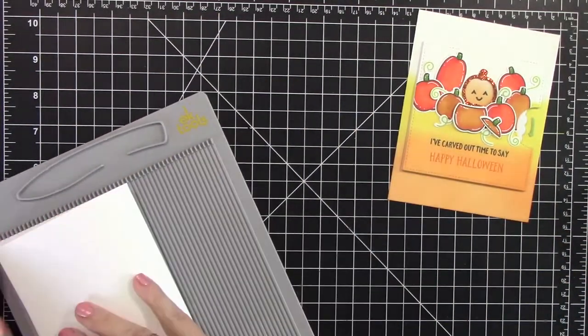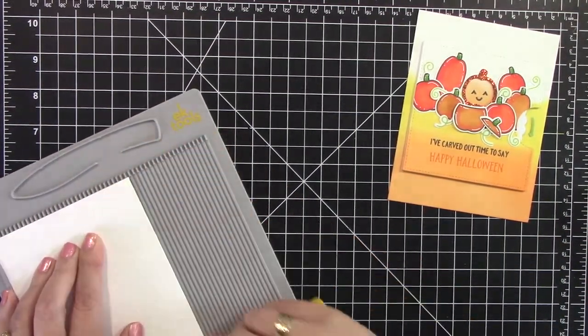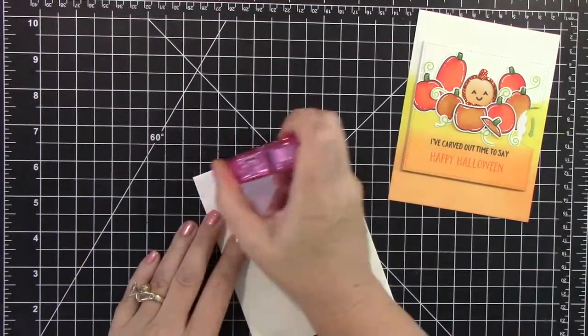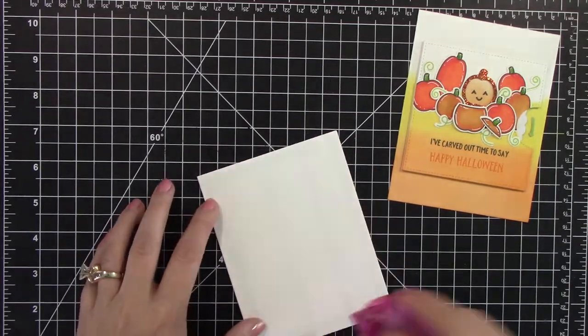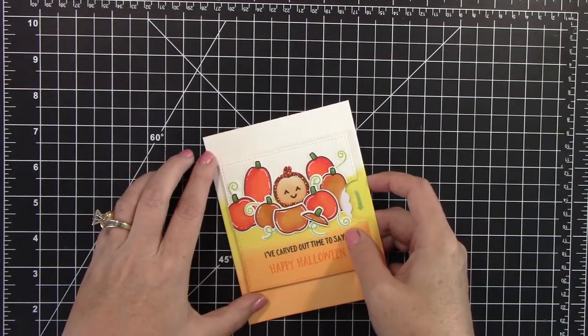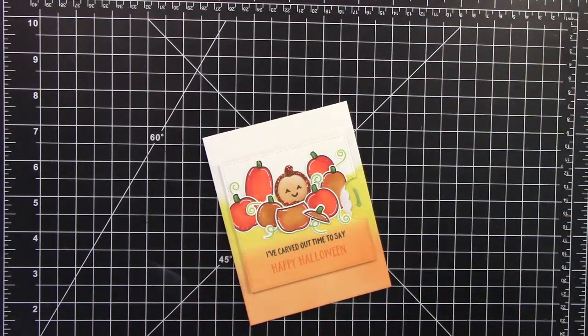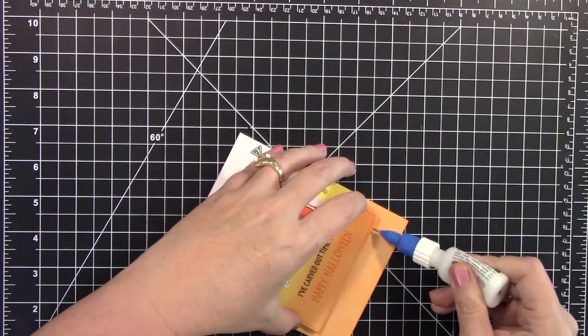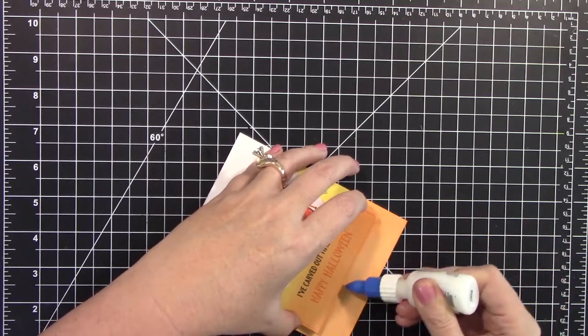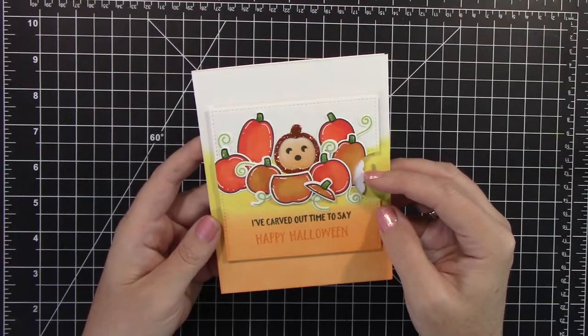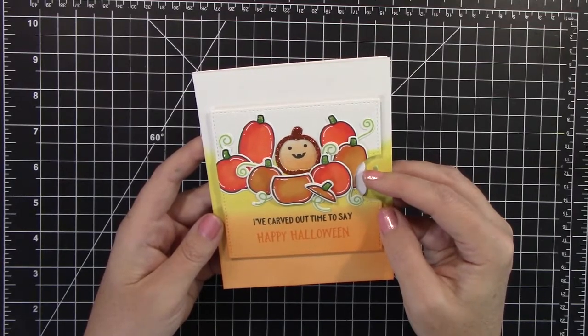So here I'm folding my A2 size card side folding. And that I'm using the Neenah Classic Crest Solar White. Just lining that up. All good. But that's where I'm noticing that the top part is not sticking. So I added the multi-mat medium just a little bit and that worked. Oh my gosh, you guys. Look at that. How fun.